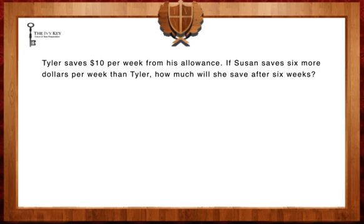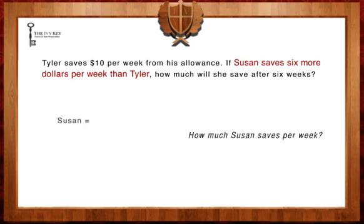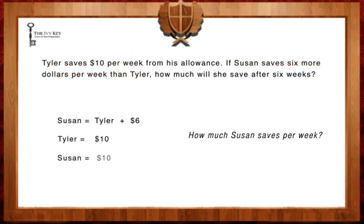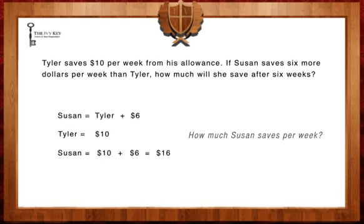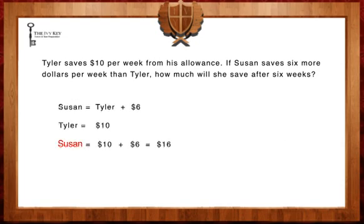The first step to solving this question is to figure out how much Susan saves from her allowance per week. We are told that she saves $6 more than Tyler, and if Tyler saves $10, then $10 plus $6 equals $16. Susan saves $16 per week.